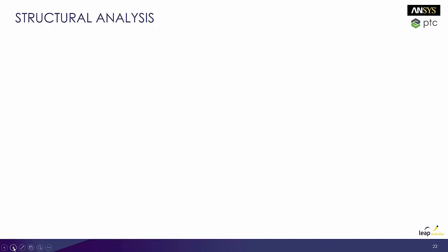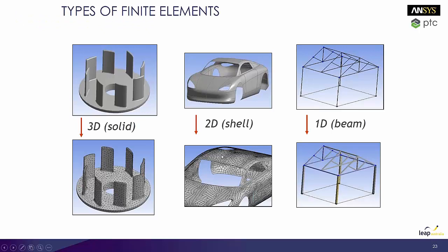We'll talk about structural analysis now. The first thing we need to do is look at the different kinds of elements available to us. We've seen 1D beams when we did the space frame, both when I created it from scratch and when I de-featured that space frame.